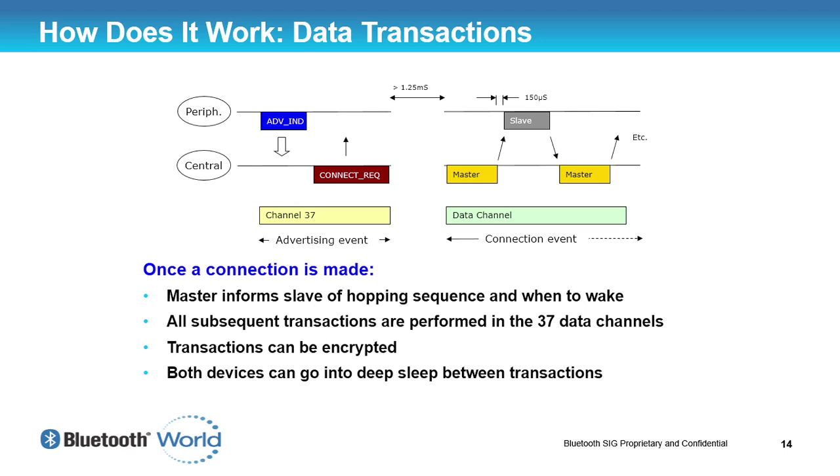Both devices can go into a deep sleep mode between transactions. There is a sleep clock accuracy that you communicate as part of the connection request, indicating how accurate your clock is. If your clock is 150 ppm, the other device can make allowances for how early or late it needs to wake up to re-synchronize. The maximum sleep clock accuracy allowed in low energy is 500 ppm. If both devices run at 500 ppm, that's a combined 1000 ppm drift. You can implement a 250 ppm free-running oscillator in CMOS without a problem, so if you need 500 ppm, good luck.